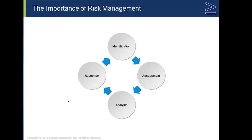Risk management is a cyclical process. It starts with identification — we identify risks on our network. We then assess those risks to determine things like: do they affect us, what are the consequences, and what is the likelihood that someone will exploit this risk? We then send that off for analysis to determine whether we need to take action, and that drives our response. This is a circular process because it has to be active — risk management cannot be passive.